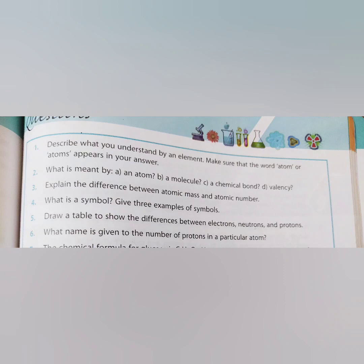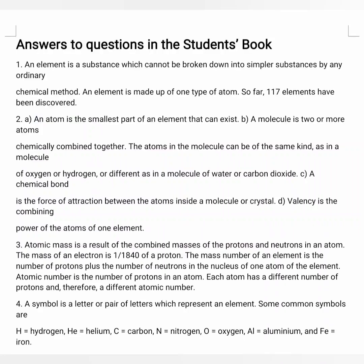Today you have to do the first three questions. Be ready with your journals, your blue marker, and your blue pen. I honestly believe that you all are now well equipped and are noting down the answers very well. Pause this video when watching so that you can easily write the answers. First question: describe what you understand by an element — make sure that the word 'atom' or 'atoms' appears in your answer. Second question: what is meant by an atom, a molecule, a chemical bond, valency?